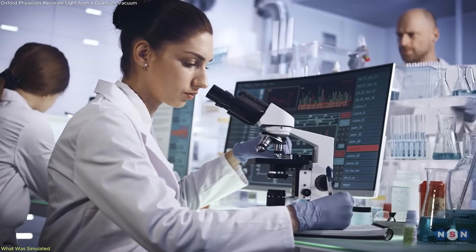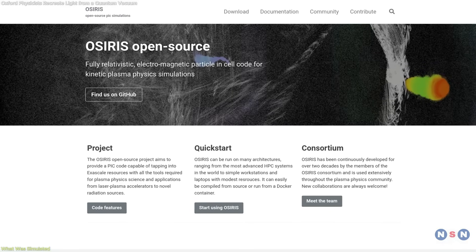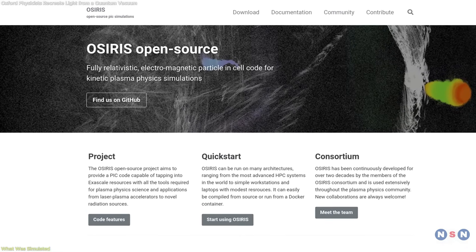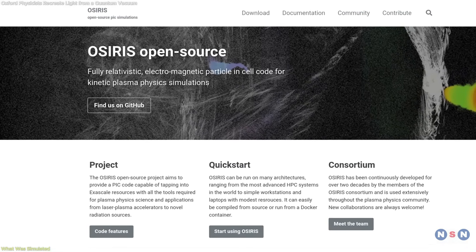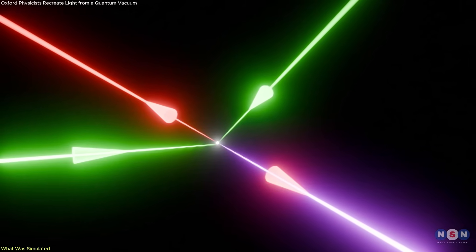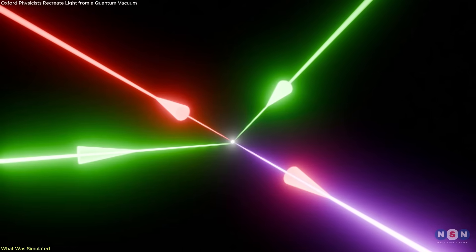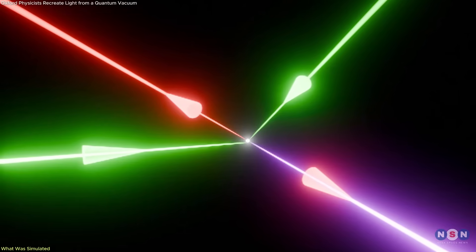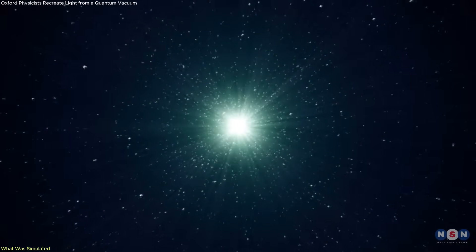The team, using the OSIRIS simulation platform, modeled this exact interaction. Three simulated laser beams were set to intersect at precise points. And under the right conditions, a fourth beam emerged, a product not of a physical medium, but of the altered vacuum state.